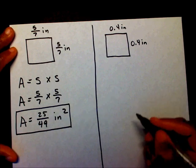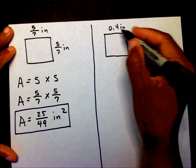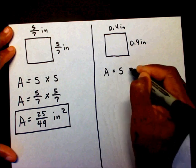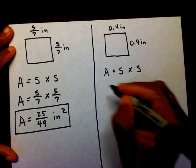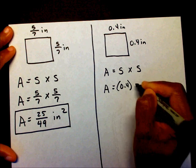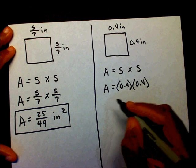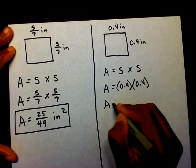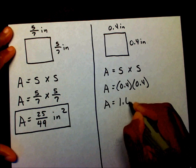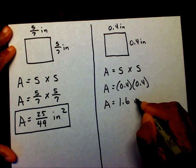Okay, over here. I know this is a square because both sides are the same, so I know I can write A equals side times side. So A equals zero-point-four times zero-point-four. Well, zero-point-four times zero-point-four is one-point-six inches squared.